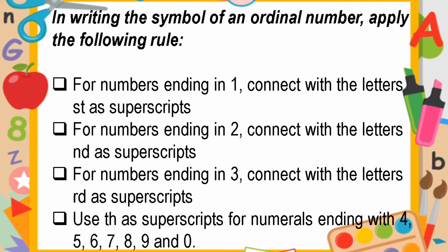For numbers ending in three, connect with the letters RD as superscript — examples are third, thirty-third, fifty-third, seventy-third. And for numbers ending in four, five, six, seven, eight, nine, and zero, use TH as superscript — for example: fourth, fifth, sixth, seventh, eighth, ninth, tenth, twentieth, fiftieth, fortieth, and so on and so forth.